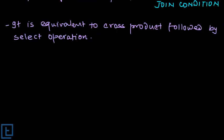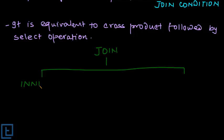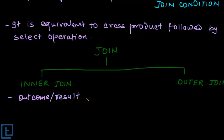Now let's understand the types of join operation. First of all, we divide join operation into two categories: inner join and outer join. In inner join, the result or outcome of join contains only the matching tuples.